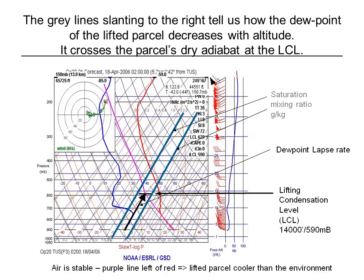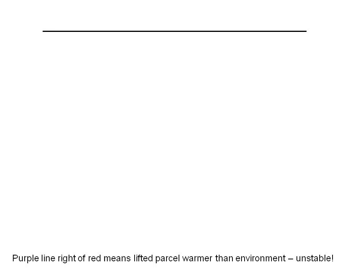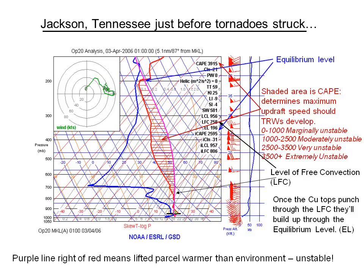If we click on the plot — in this case a surface parcel — we can immediately tell whether that air is stable or unstable. If the purple line is to the left of the red one, the lifted temperature is colder than the ambient temperature, the parcel would be more dense and sink back down — that's a stable situation. Conversely, if the purple line drifts to the right of the red temperature curve, it was unstable. On the next viewgraph, we see an example of a very unstable profile — a profile taken at 0100 Zulu at Jackson, Tennessee (MKL), and about 30 minutes later they had a tornado go through the town.